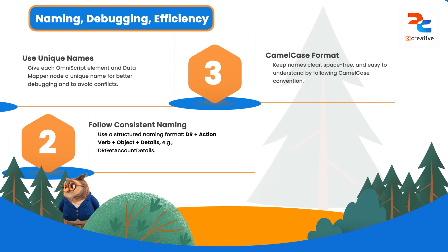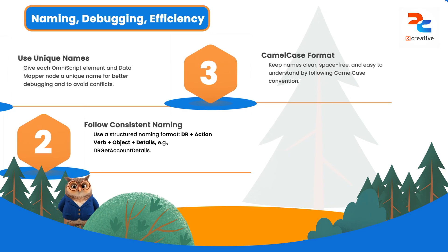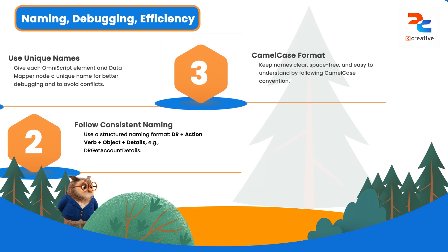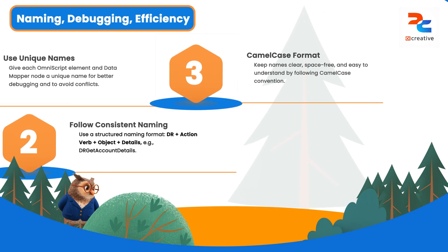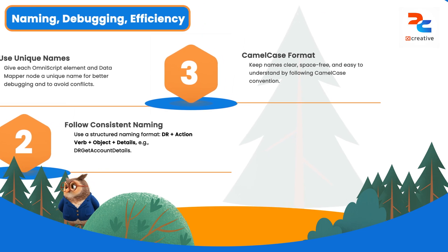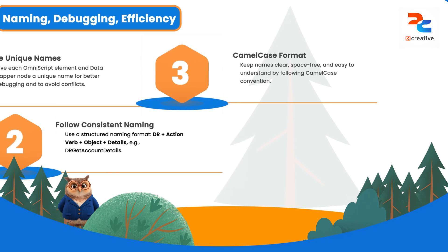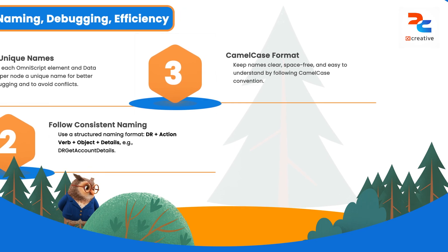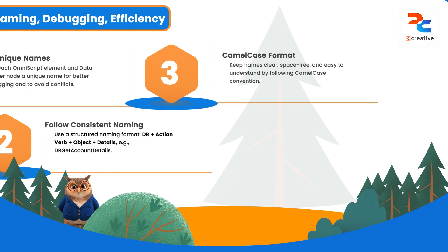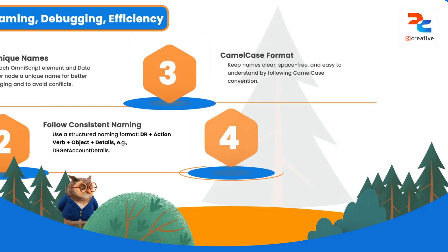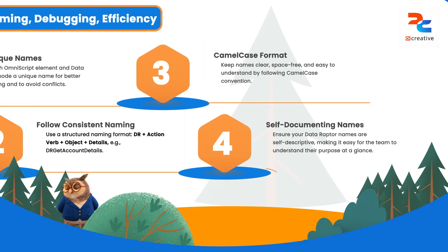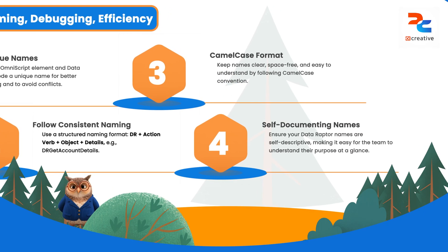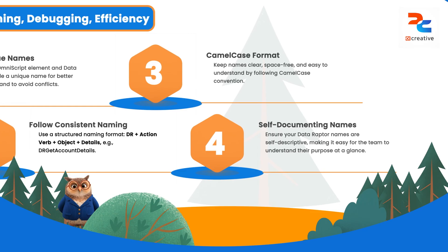For example, 'drGetAccountDetails' clearly tells you this data mapper extracts details for an account, while 'drUpdateContactAddress' tells you it updates a contact's address. By following this simple descriptive structure, you ensure that every data mapper is self-documenting, and your team can quickly understand its purpose just by its name.